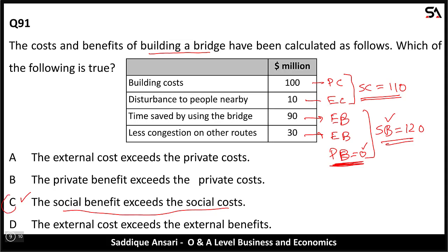Option A: external cost exceeds private cost — the government is not only comparing external costs and private costs in cost-benefit analysis, so A cannot be the answer. Option B: private benefit exceeds private cost — the government is not only considering private benefit and private costs, so B cannot be the answer. Option D: external cost exceeds external benefit — the government considers total social costs and social benefits, not just external components. Hence C is the correct answer.